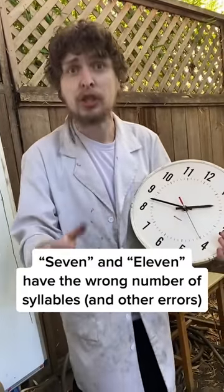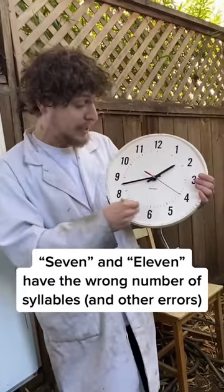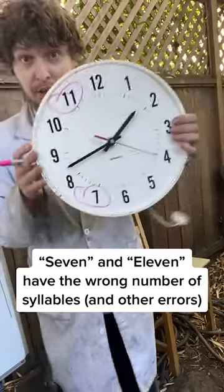The numbers that have the dumbest spelling in English have got to be 7 and 11. Let me explain.